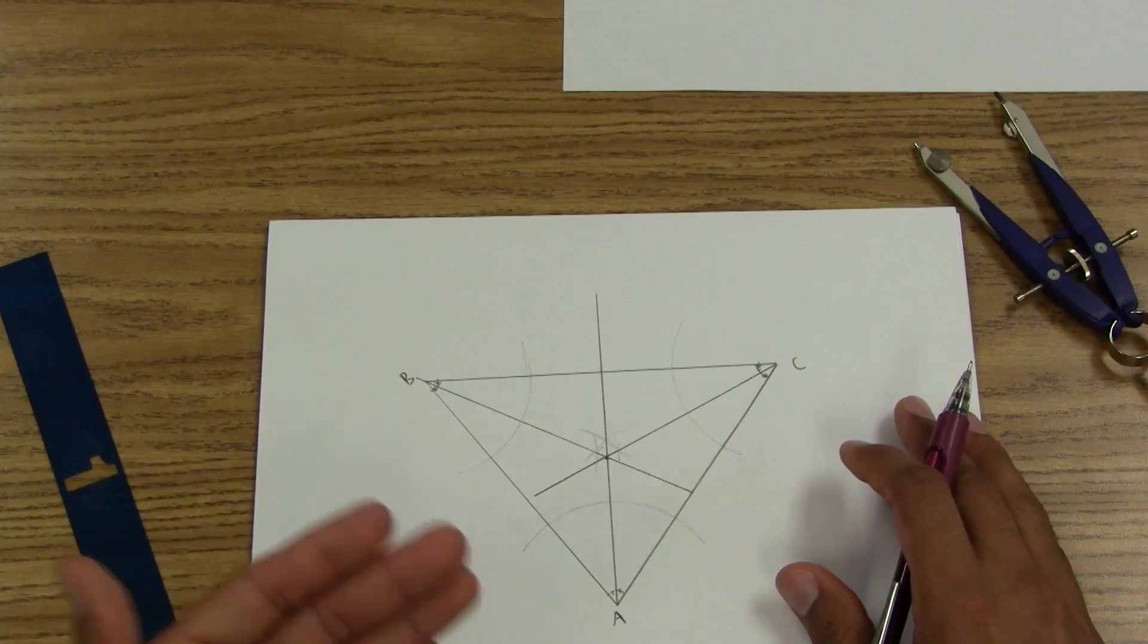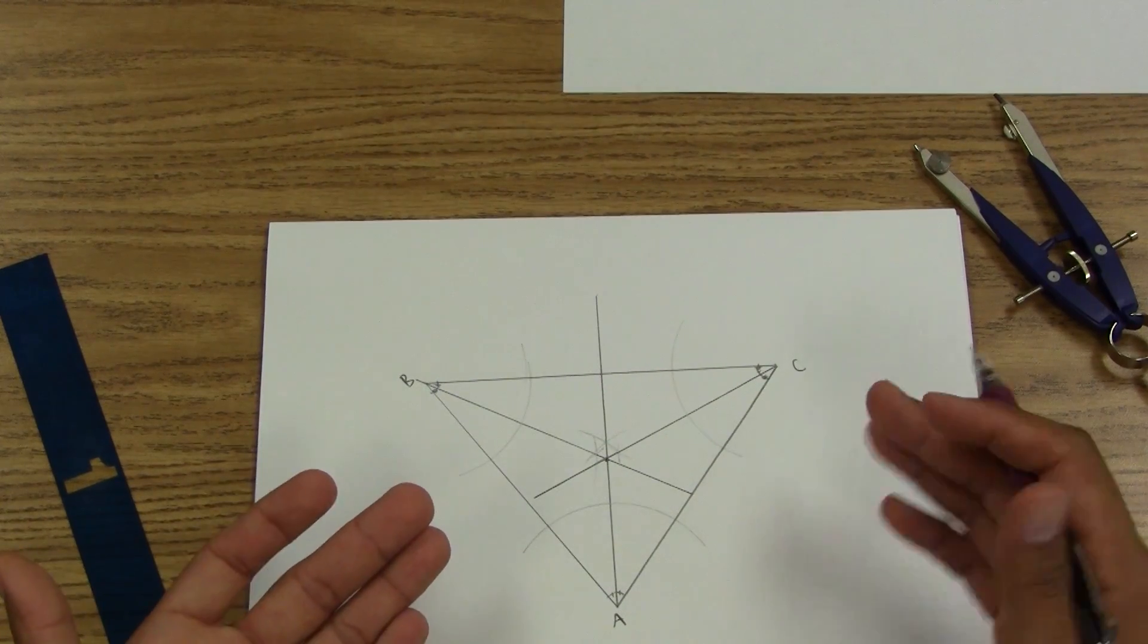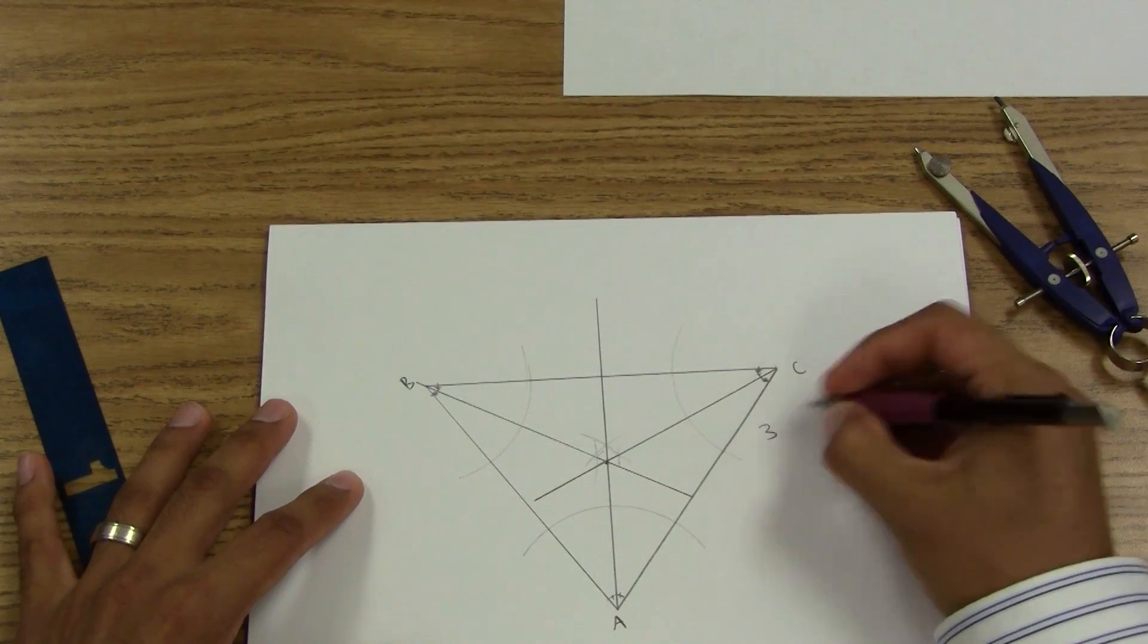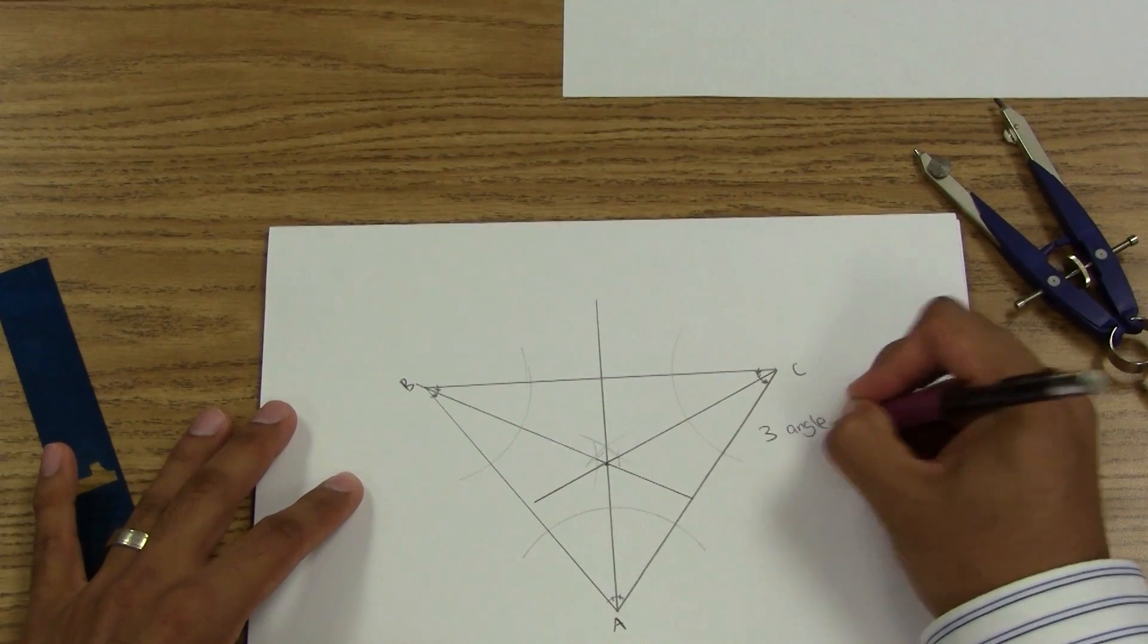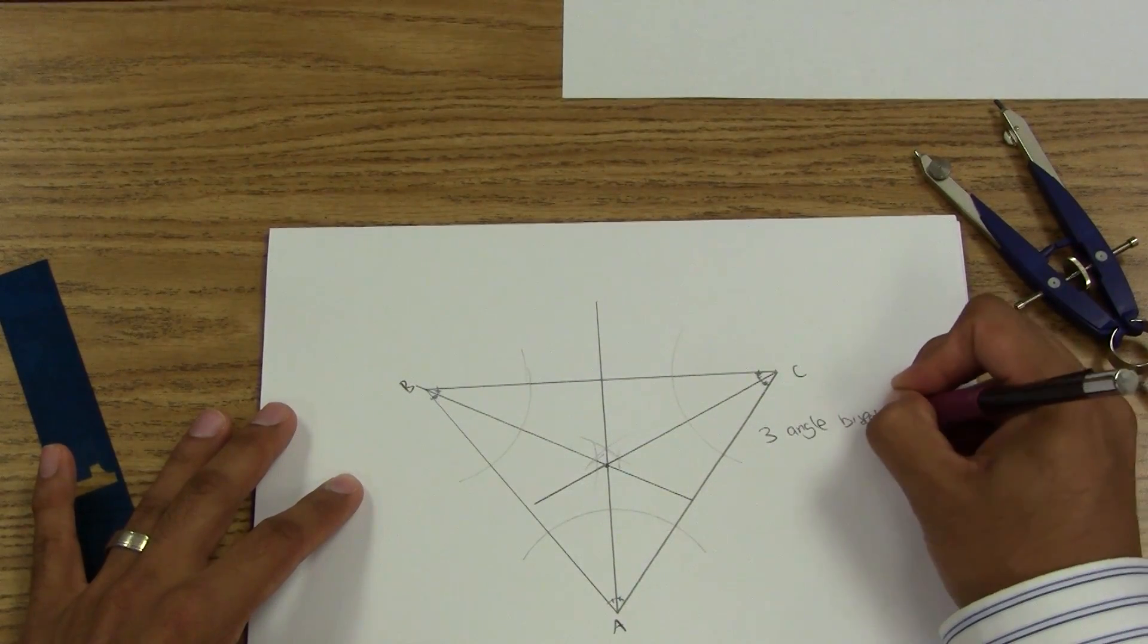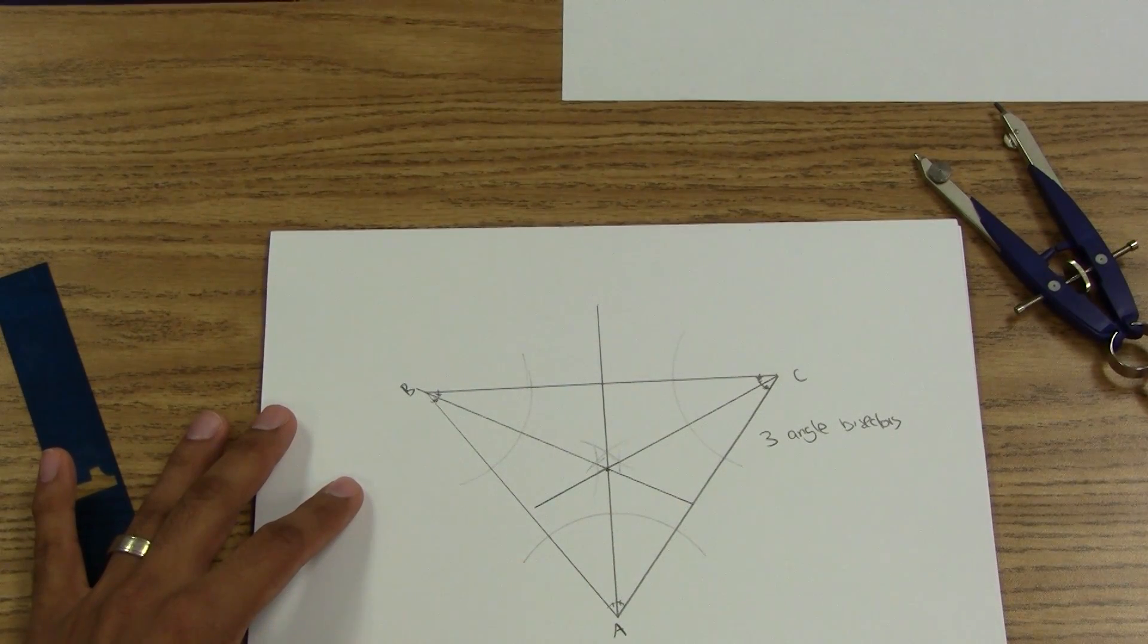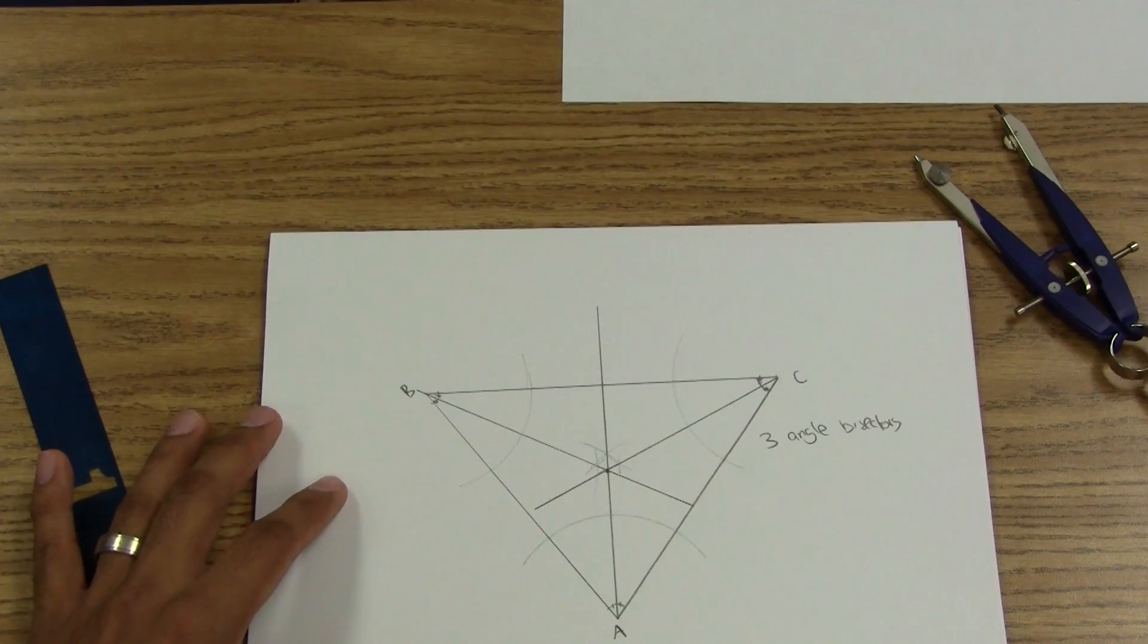So this must be some sort of special thing. Remember here we use three angle bisectors, but why is this special?